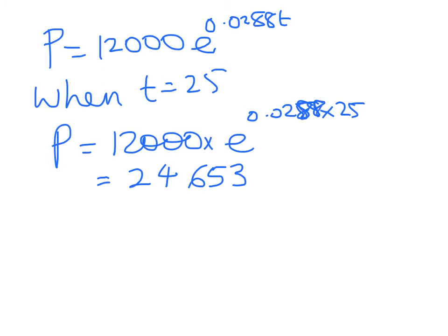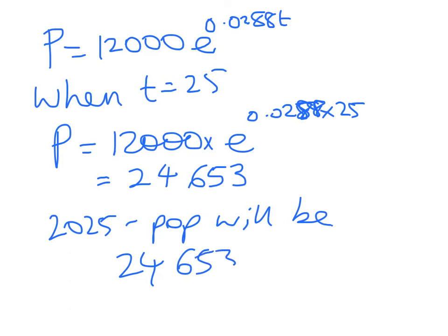Now I've cheated a little bit here. I haven't got my graphics calculator right next to me, so I've used the number off the schedule. If you have rounded that not as much, you might get a slightly different number. You're working with a population, so you want to round it to the nearest person. So in 2025, population will be 24,653 people. On to the excellence question.